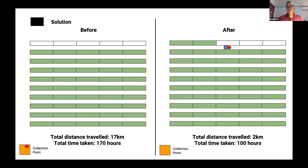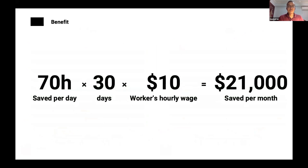The value we provide is that we are able to save up to 70 man-hours per day. If you multiply this by 30 days and $10, which is the worker's hourly wage, this amounts to $21,000 saved for the company each month.